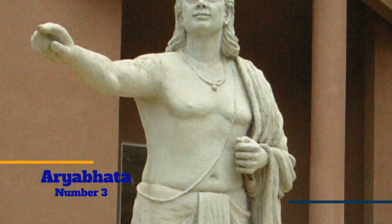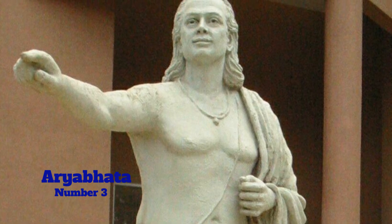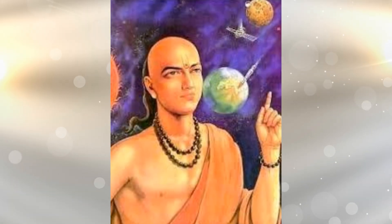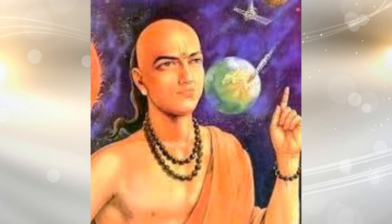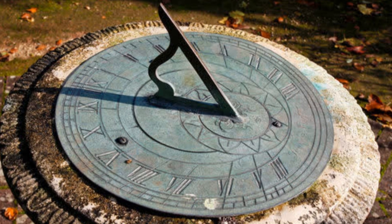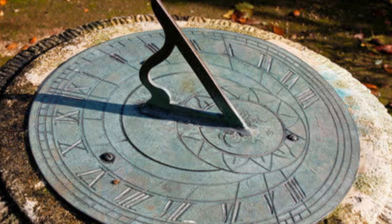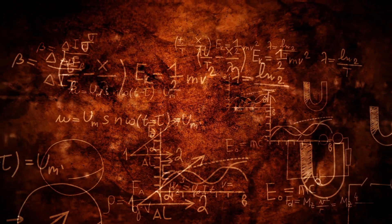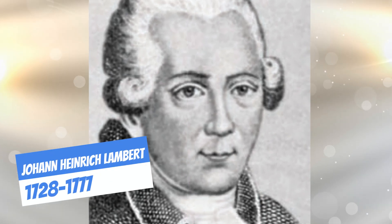Number 3: Aryabhatta. Aryabhatta was an Indian mathematician and astronomer of the classical age of Indian mathematics. His pure mathematics discusses topics such as the determination of square and cube roots, geometrical figures with their properties and mensuration, arithmetic progression, problems on the shadow of the gnomon, quadratic equations, linear and indeterminate equations, and zero. Aryabhatta calculated the value of Pi to the fourth decimal and was likely aware that Pi was an irrational number around 1,300 years before Lambert proved the same.